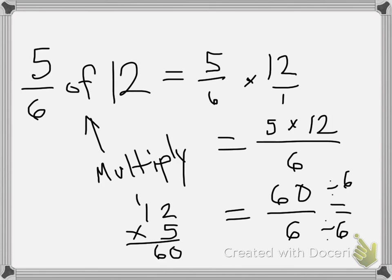So 60 divided by 6 is 10. And 6 divided by 6 is 1, so it's 10 over 1. The answer is just 10 because 10 divided by 1 is 10. This is the answer.